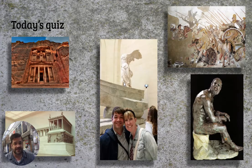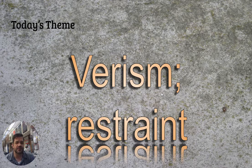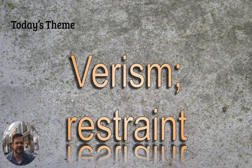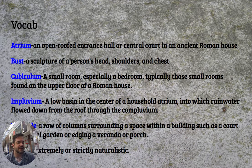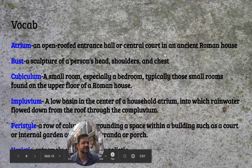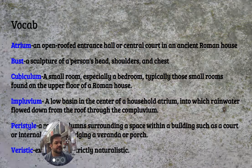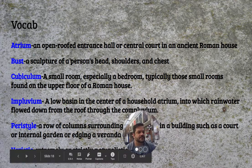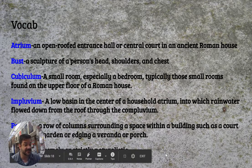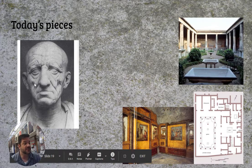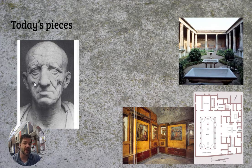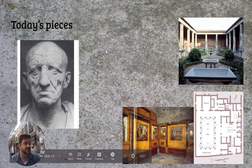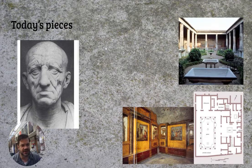Make sure that you take your quiz on these pieces. Today's theme for the Roman Republic is verism and restraint, and we're going to be talking about what those mean in the context of art. Just write that down in your notebook as some vocab for your convenience. We've only got two pieces today in the Roman Republic: a bust and a house.